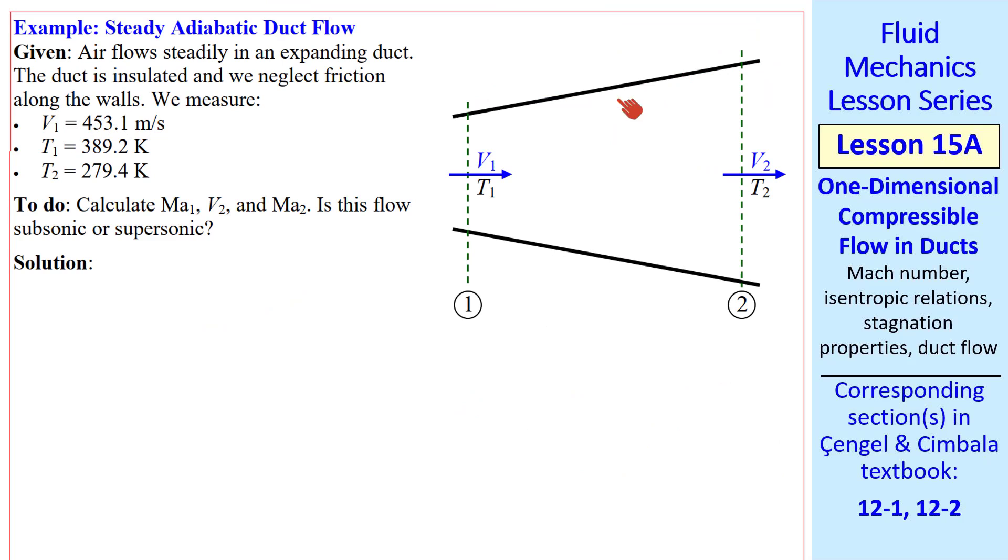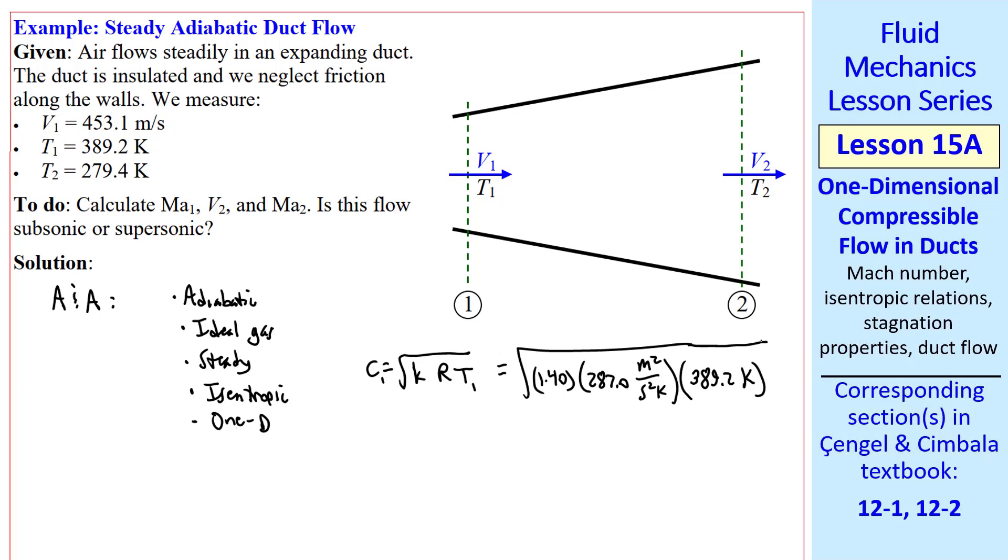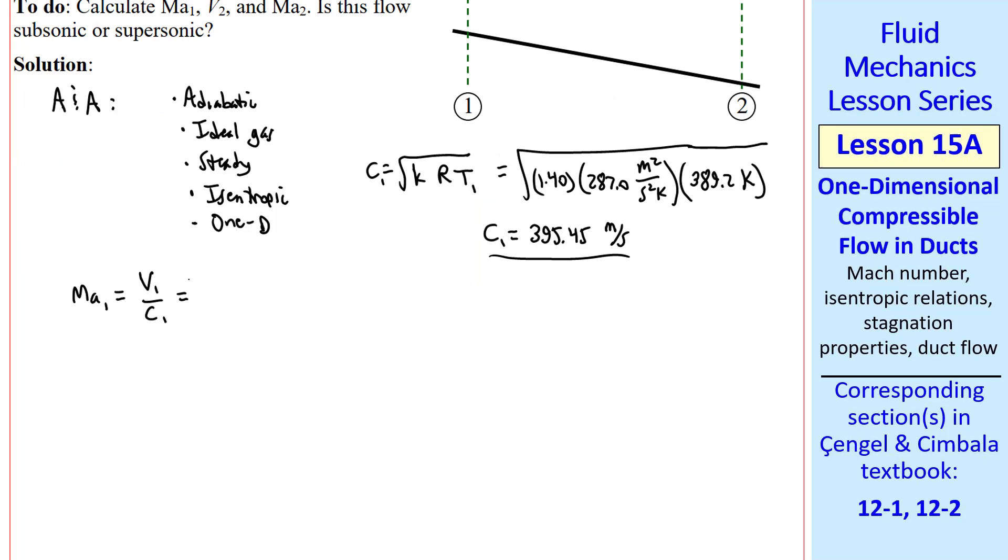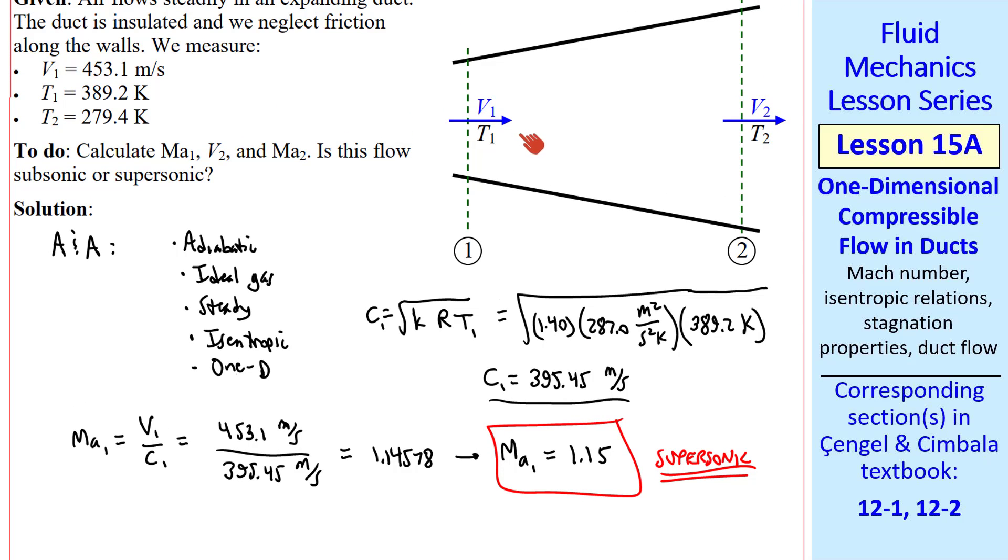Let's do an example problem. Air flows through an expanding duct. We give the speed and the temperature at 1 and the temperature at 2, and we're asked to calculate the two Mach numbers and the speed at 2. First, I list my assumptions: adiabatic, ideal gas, steady, isentropic, and one dimensional. We can calculate the speed of sound. At location 1, it's the square root of K, R, and T. I get about 395 meters per second. For the given speed, we calculate Mach number 1, which is V1 over C1, which to three digits is 1.15, which is supersonic. Since this flow is diverging and the flow is supersonic, Mach number will increase as we go through this diverging duct.